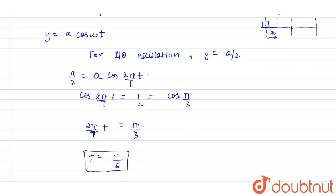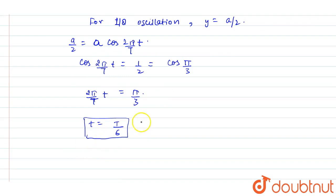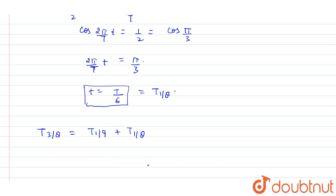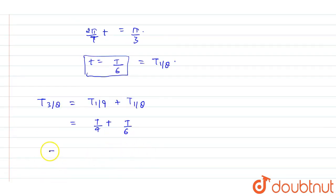T/6 is for 1/8 oscillation. Now the total time for 3/8 will be equal to time taken in 1/4 plus time taken in 1/8. So T/4 plus T/6 equals 5T/12. This is the time taken in 3/8 oscillations, 5T/12.